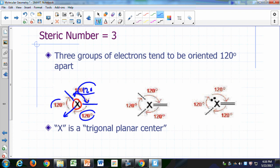120 degrees between any pair of groups here, between any pair of domains, the angle is going to be 120 degrees.